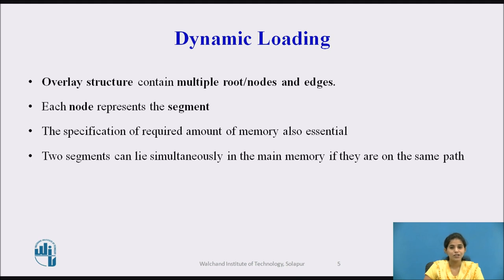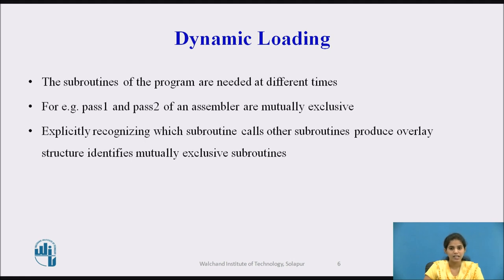The interdependency of the segments can be specified by a tree-like structure called the overlay structure. The overlay structure contains multiple nodes and edges, and each node represents a segment. The specification of the required amount of memory is also essential in this structure. Two segments can lie simultaneously in main memory if they are on the same path. Usually, the subroutines of the program are needed at different times. By explicitly recognizing which subroutine calls other subroutines, it is possible to produce the overlay structure that identifies mutually exclusive subroutines.